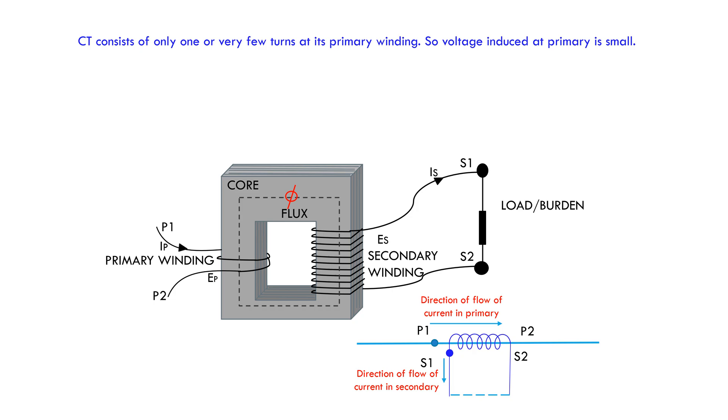The CTR, CT ratio 600 by 1 ampere means when primary current is 600 ampere then secondary current will be 1 ampere. Current in secondary winding will be increased or decreased proportionally with the increase or decrease of primary current. The same formula is applied here as power transformer.